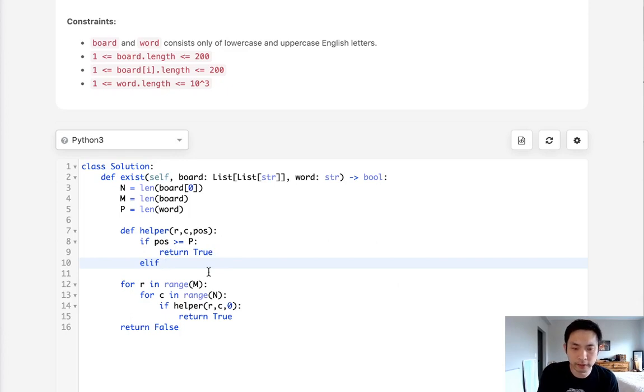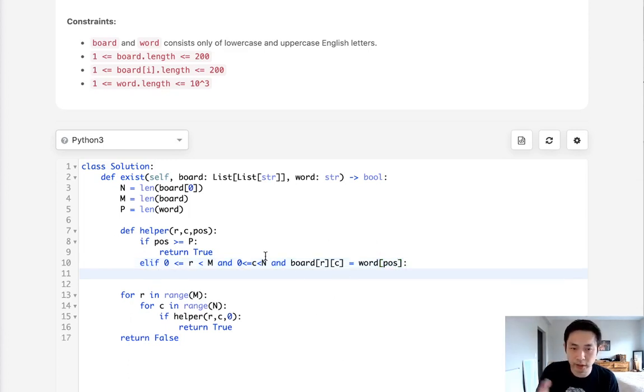Let's start with the out of bounds check. Make sure that the row is greater or equal to 0 and less than m, and same thing with the columns—greater or equal to 0 and less than n. And this board at this current cell that we're at is equal to the current word position that we're at. If all these conditions are met then we could recall our recursion.